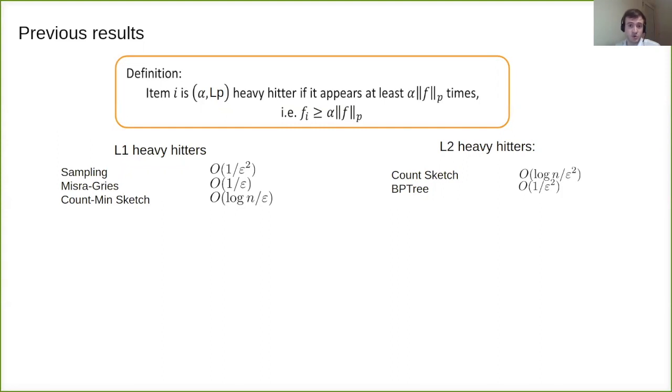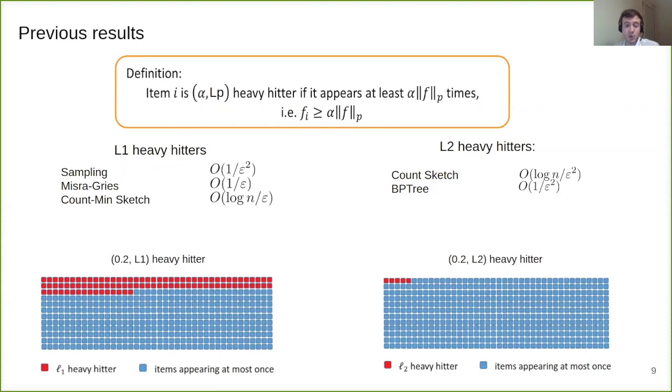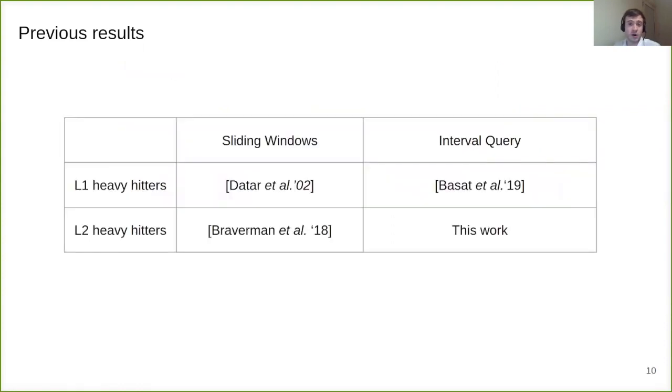Left one depicts the 0.2 L1 heavy hitters in the stream where every other item appears at most once. Right picture shows L2 heavy hitters where every other item appears at most once. It's also 0.2 but L2 heavy hitters. Note that it's obviously more difficult to find L2 heavy hitters. It appears way less often. While there is a line of work for both L1 and L2 heavy hitters in sliding windows, only L1 was considered in the interval query model. We will fill this gap with our algorithm by considering interval query for L2 heavy hitters.